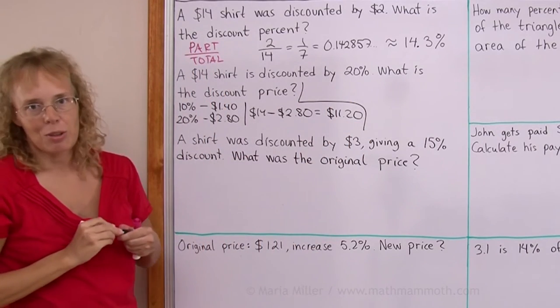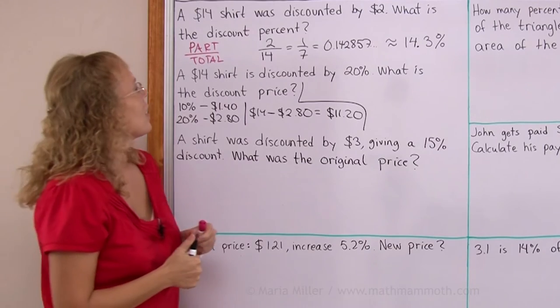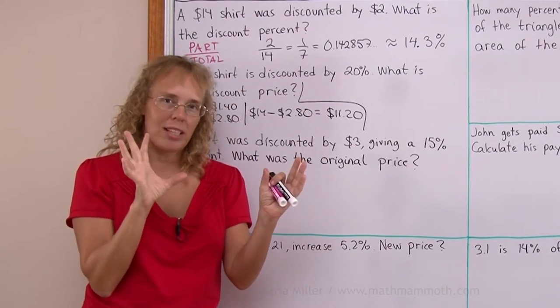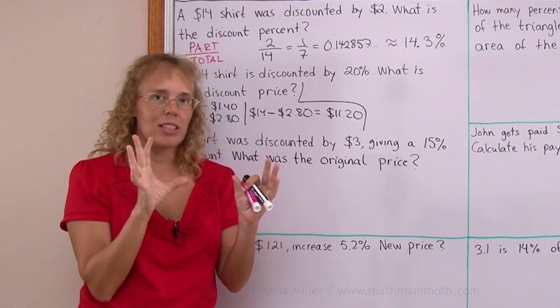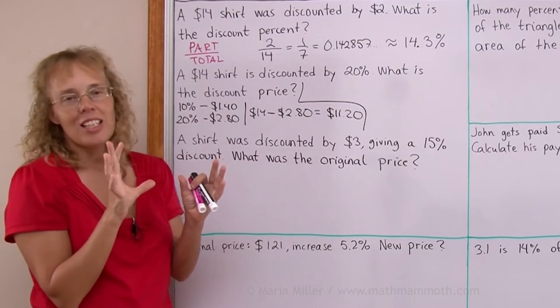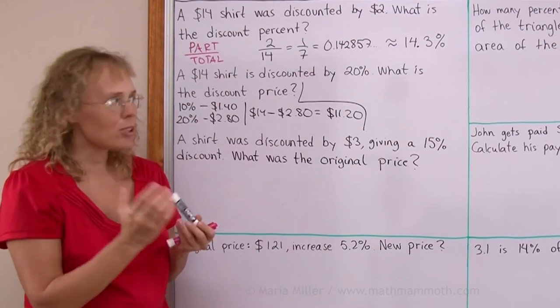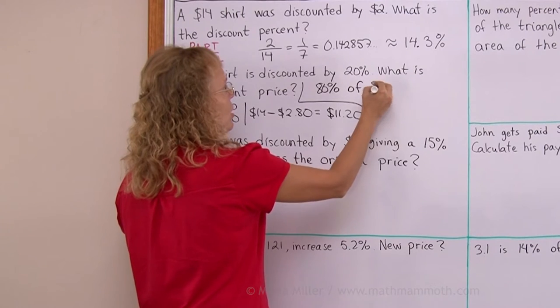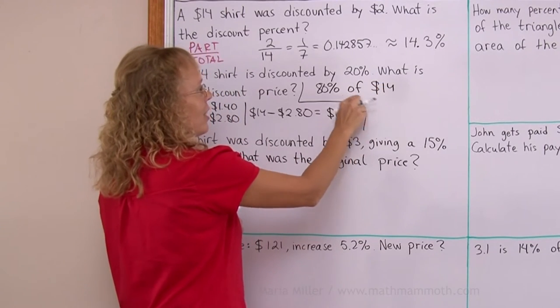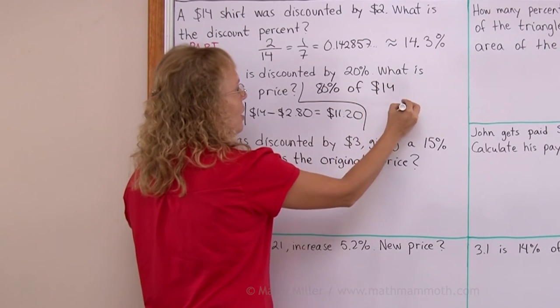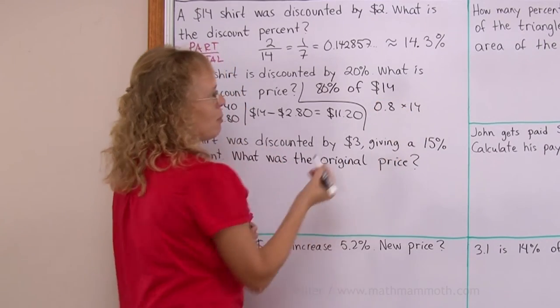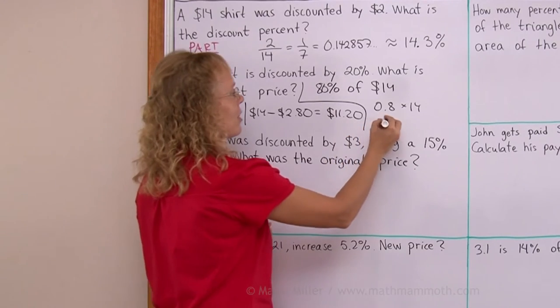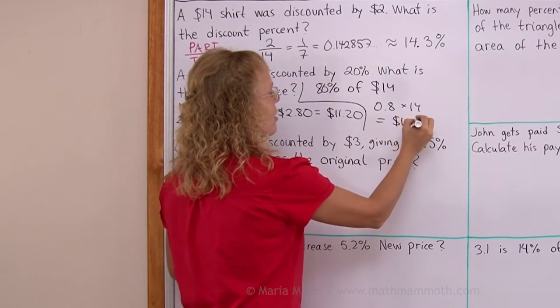But I'll show you another way as well. And that is, if it is discounted by 20 percent, then 80 percent of the price is left. 80 percent of $14. You see the word of there again, this translates into multiplication 0.8 times 14. So that's the other way to solve this problem. Of course, you would get the same answer. $11.20.